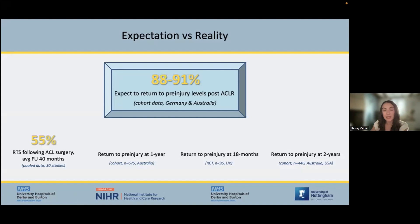Looking at return to pre-injury levels specifically: what percentage have returned at one year? The options were 13%, 24%, 35%, or 46%. Votes favoured 24% and 35%, and the answer is 24%. At 18 months, the options were 28%, 34%, 41%, or 49%.